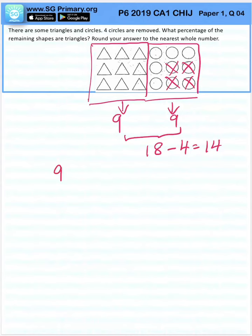So remaining shapes of triangles over the new total times 100, which will give us 64.285.